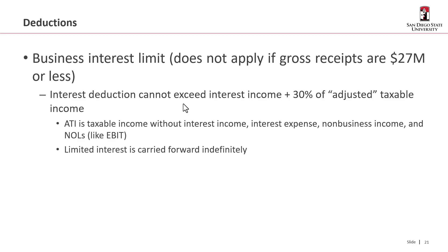Adjusted taxable income is your taxable income without interest income, without any deduction for interest expense, without any non-business income, and without any net operating losses. Think of it like your earnings before interest and taxes — what they call EBIT. If your deduction is limited, you can carry it forward indefinitely into future years and try to deduct it against income in those future years.